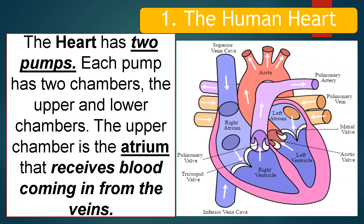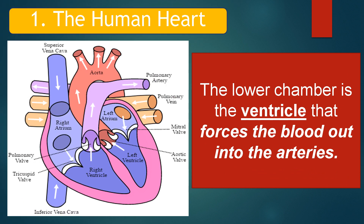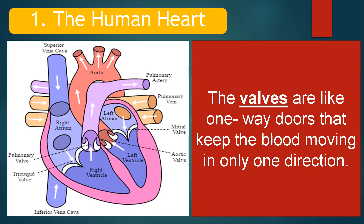The heart has two pumps, and each pump has two chambers: the upper and lower chambers. The upper chamber is the atrium that receives blood coming from the veins. The lower chamber is the ventricle that forces the blood into the arteries. There is a valve between each atrium and ventricle to prevent the blood from flowing backwards. The valves are like one-way doors that keep the blood moving in only one direction.